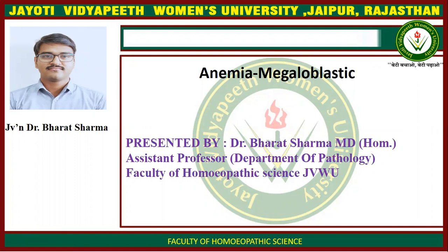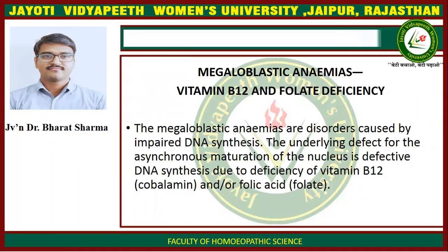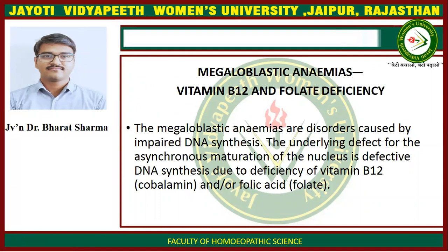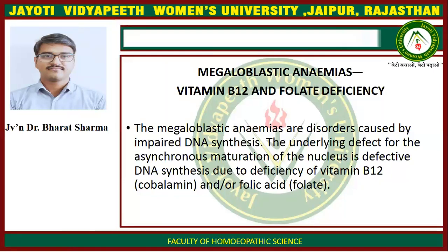Today's topic is megaloblastic anemia — megaloblastic anemia or vitamin B12 and folate deficiency. The megaloblastic anemias are disorders caused by impaired DNA synthesis. The underlying defect for the asynchronous maturation of the nucleus is defective DNA synthesis due to deficiency of vitamin B12 and/or folic acid.